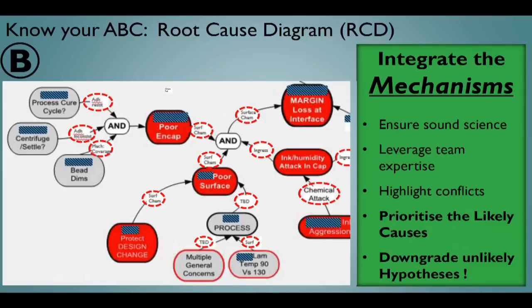In summary, the second tool: integrate the mechanisms, ensure sound science, leverage team expertise, highlight conflicts, and most importantly, prioritize the likely causes and downgrade unlikely hypotheses. It's very important to push down bad hypotheses, or you'll waste time.